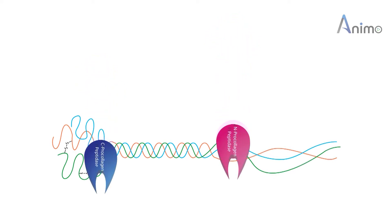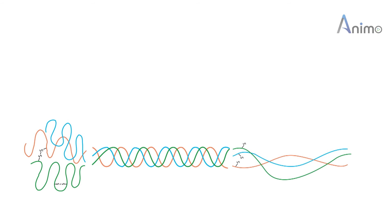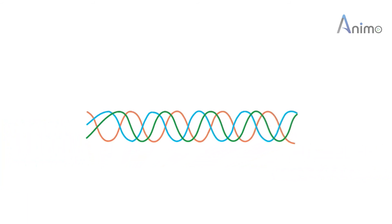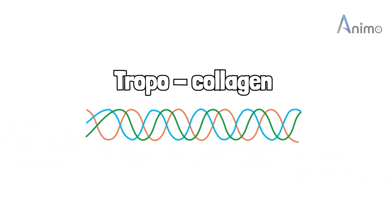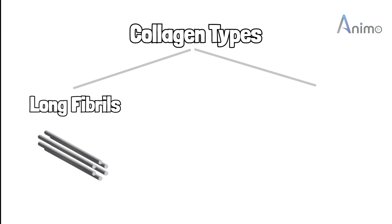Now the pro-collagen is called tropocollagen. Here, collagen faces two fates: either it can become long fibrils, for example, collagen type 1, 2, and 3, or it can make a mesh network just like collagen 9 and 11.